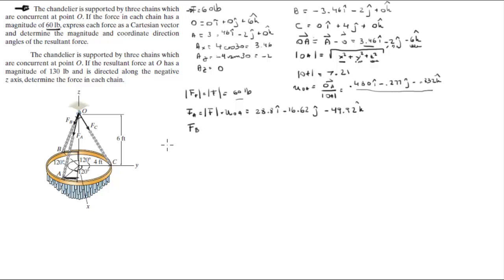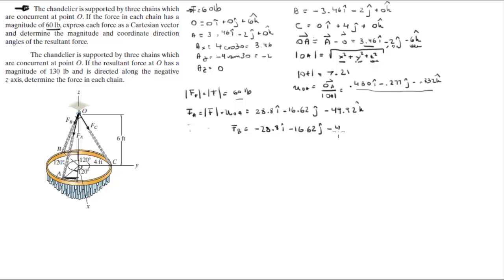We can also find FB by symmetry. Since FA has 28.8i in the positive x direction, FB goes towards the negative x, so it's -28.8i. They both go towards negative y, so that remains -16.62j, and both go towards negative z, so it's still -49.92k. Therefore FB = -28.8i - 16.62j - 49.92k pounds.